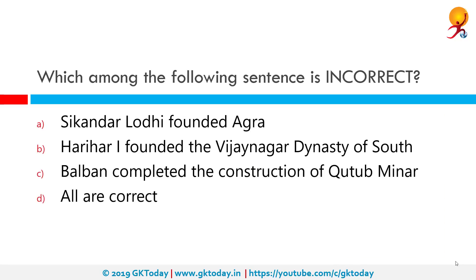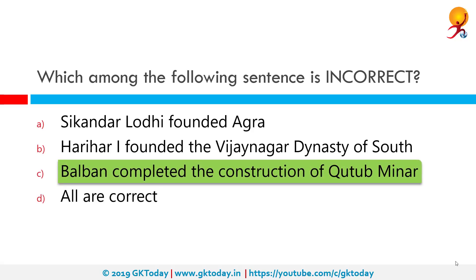Which among the following sentence is incorrect? Among the given options, option C — which states Balban completed the construction of Qutb Minar — is incorrect. In fact, Iltutmish completed the construction of Qutb Minar.